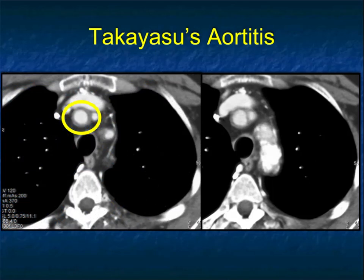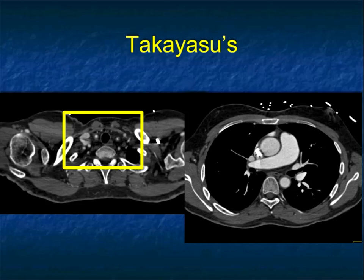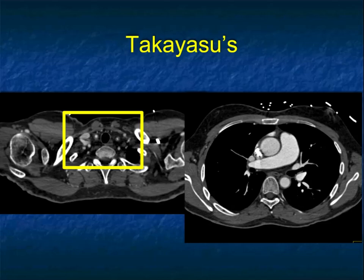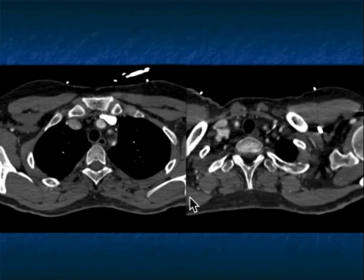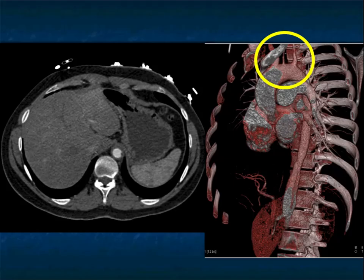Here's a nice example showing the thickening of the right innominate and the left subclavian off the arch. Look at the caliber of the patient's carotid arteries — they are very narrow, with almost minimal flow in the lumen. There's some thickening over the descending thoracic aorta as well. Additional images of the left carotid and subclavian artery really show this concentric thickening, and with that thickening you see narrowing of the lumen — very classic in Takayasu's.